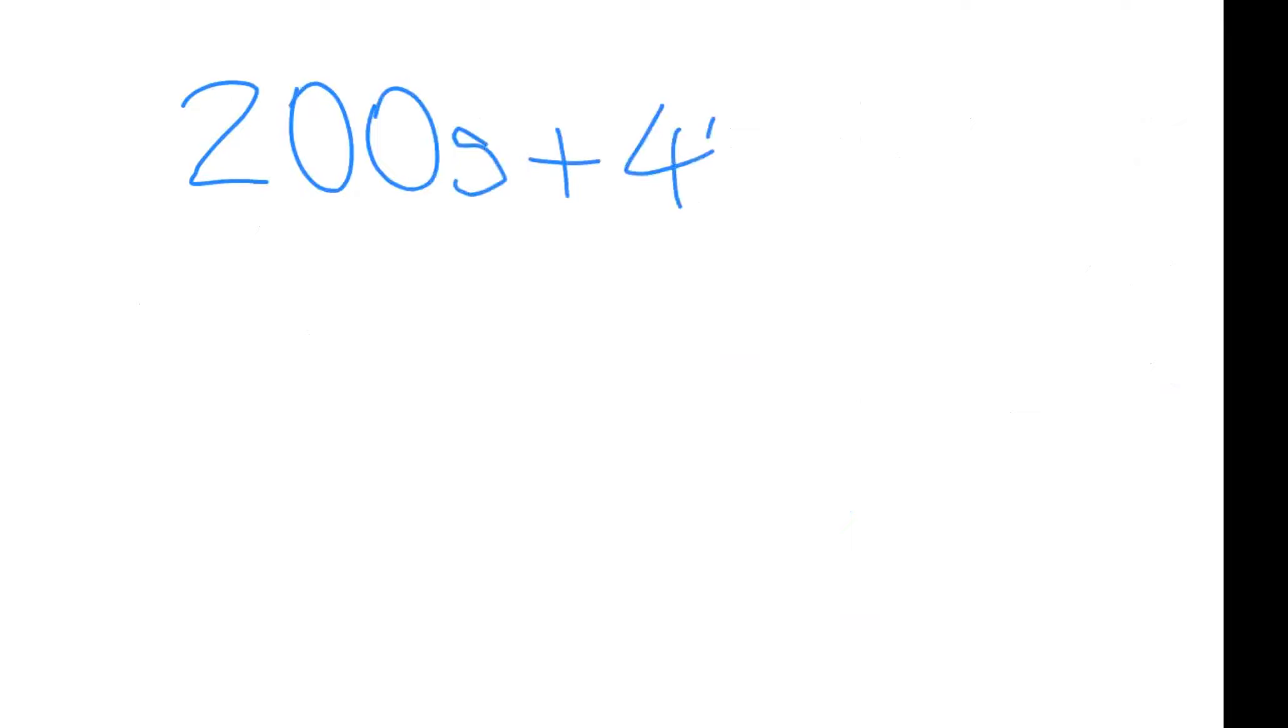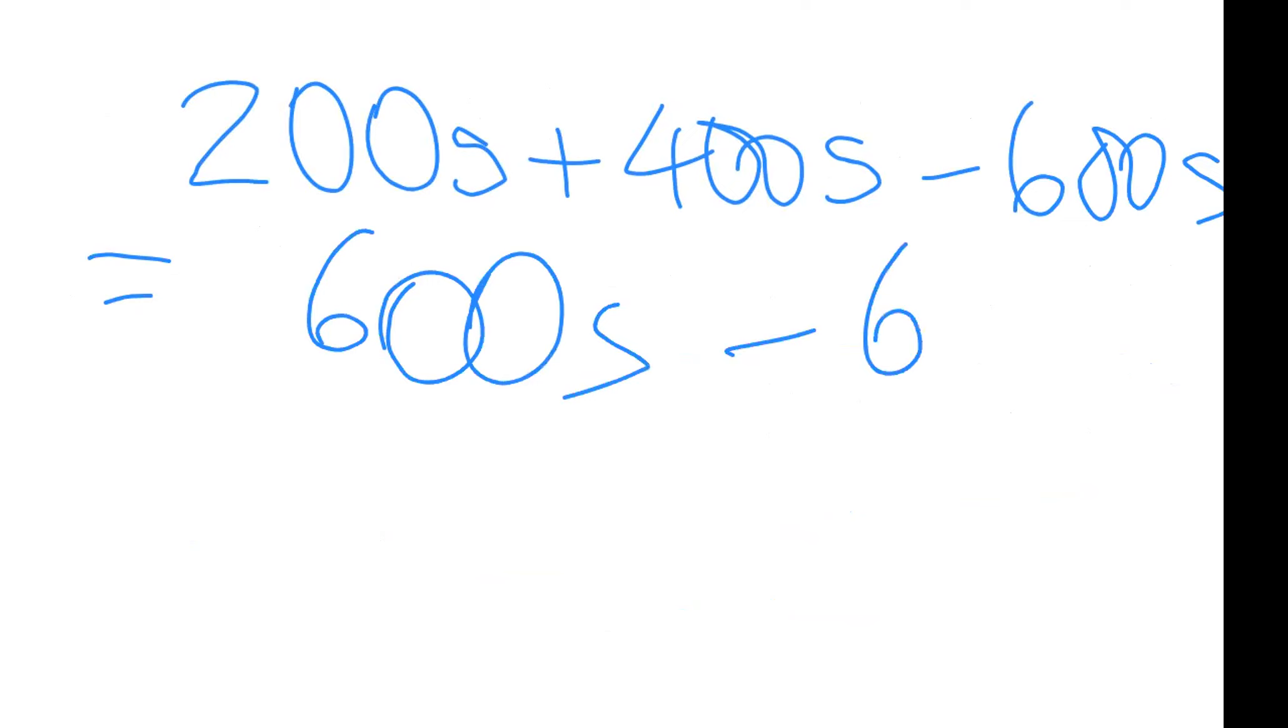200s plus 400s minus 600s. So here we go: 200s plus 400s. All of these are like terms, all of them are s, so you go ahead and you add these two: 600s.